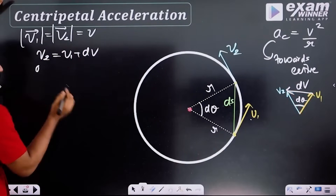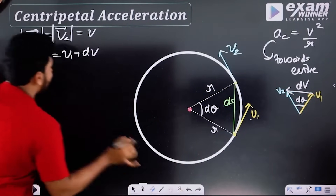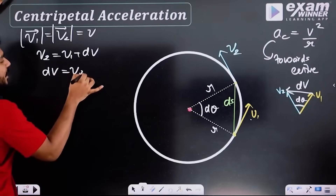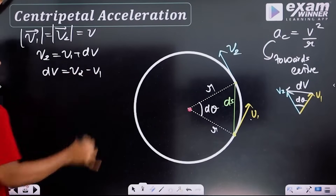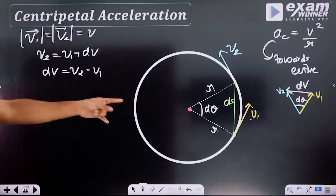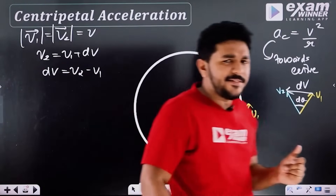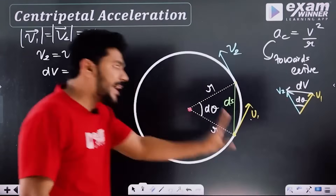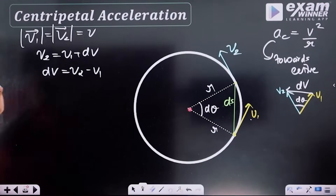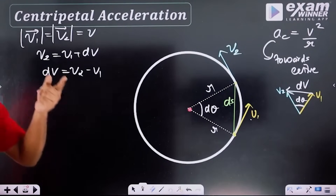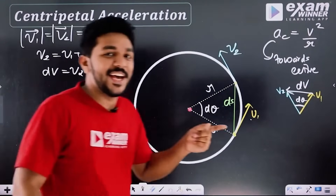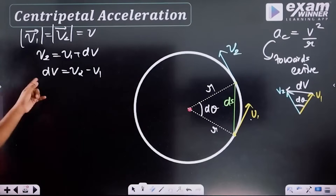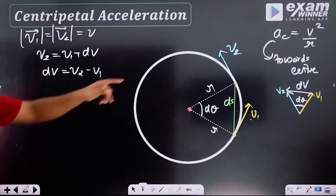That gives us dv. If dv equals v2 minus v1, then change in v equals v2 minus v1 — that is correct. That means it is theta. dv equals v2 minus v1, so dv is the change in velocity.